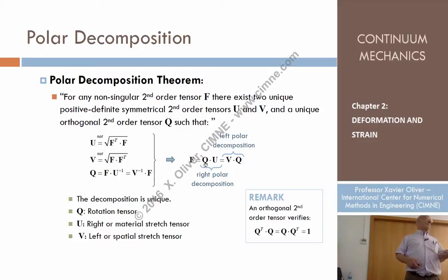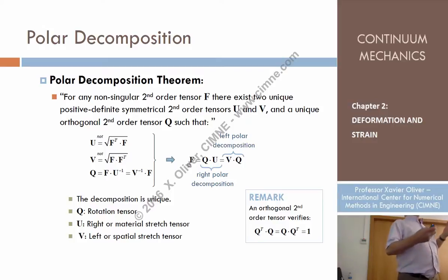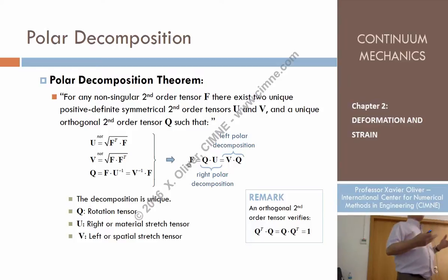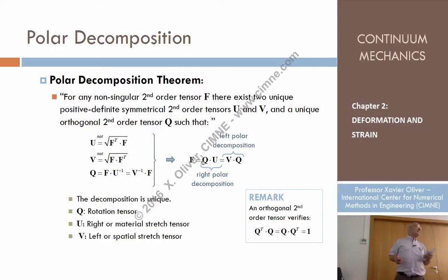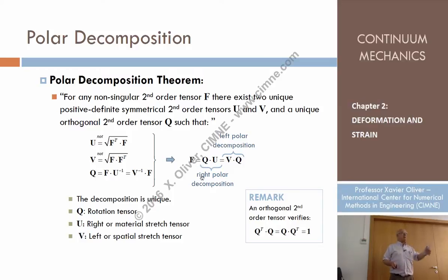In other words, this is a way to separate the information in tensor F. There is too much information in tensor F — there is information about what happens in rigid body motions with no changes of angles and distances. I anticipate that this information is going to be contained in Q, which is not saying anything about strains. The information about changes of distances and angles is contained either in U or in B.